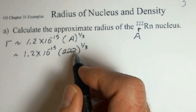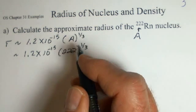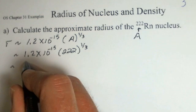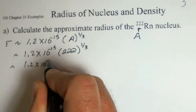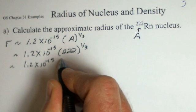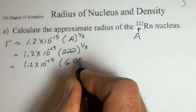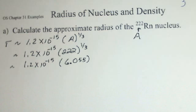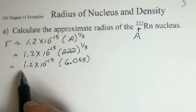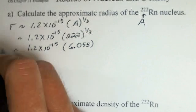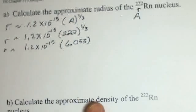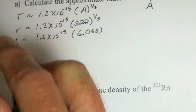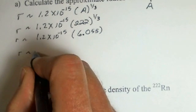222 to the one-third power. It means you need to take a cube root. You need to practice that with your calculator. And I believe you will have a value of around 6.055 for that cube root of 222. And then multiplying by the 1.2,